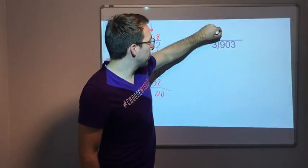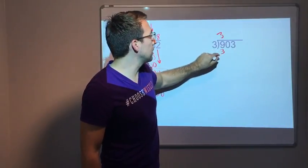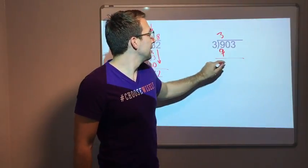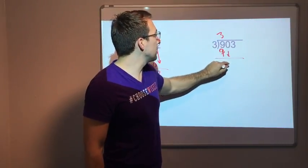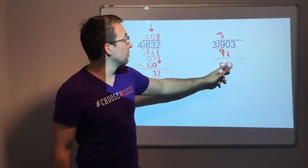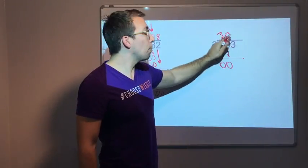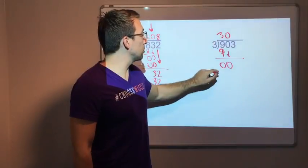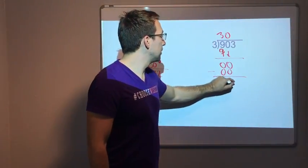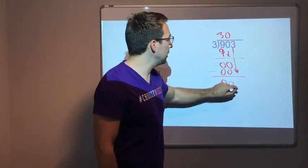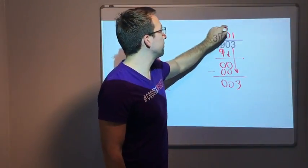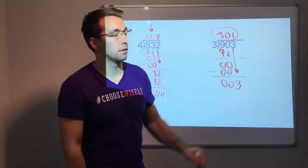Three goes into nine three times, so that would be three. Three times three is nine, zero. Bring down our zero. Three does not go into zero, so we're going to have a placeholder. Zero times three is zero. Subtract that: zero, zero. Bring down our three. Three goes into three one time.